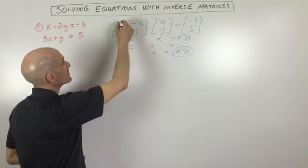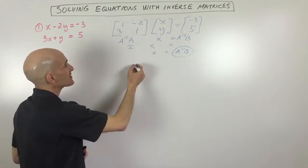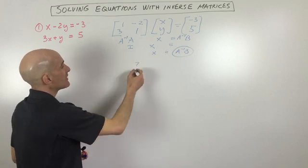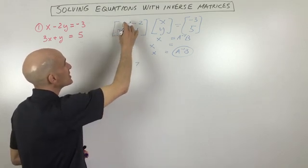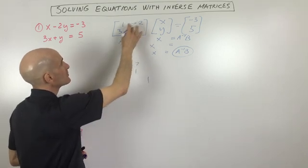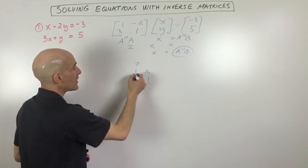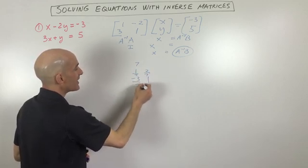Well, first thing we want to do is find the determinant. So that's 1 minus negative 6, which is 7. Then what we're going to do is interchange the A and the D, but you can see that's not going to make much of a difference. And we're going to make the B and the C the opposite sign. So that's 2 and negative 3. We're going to divide all those elements by the determinant, which is 7.